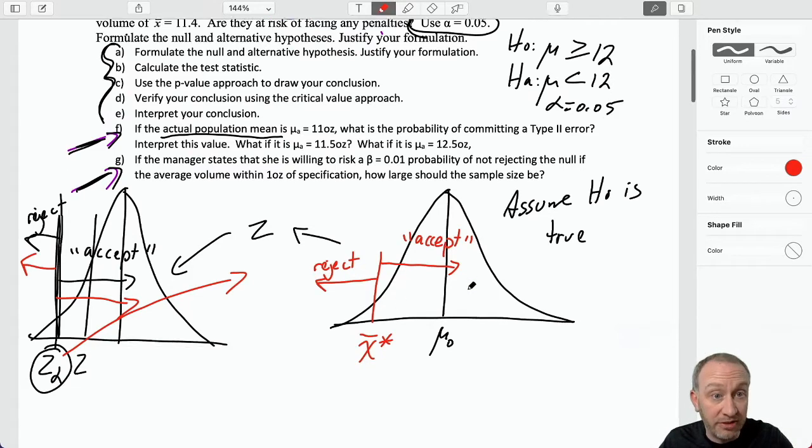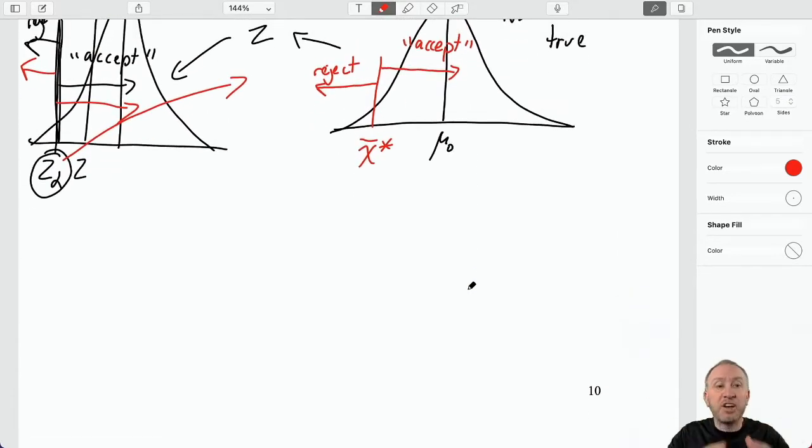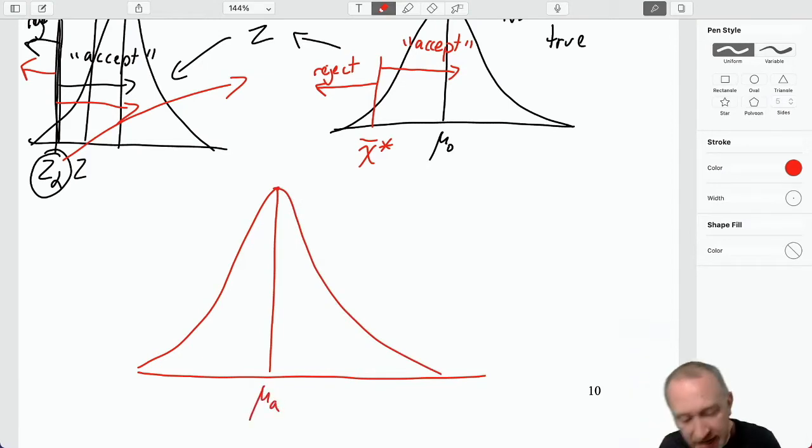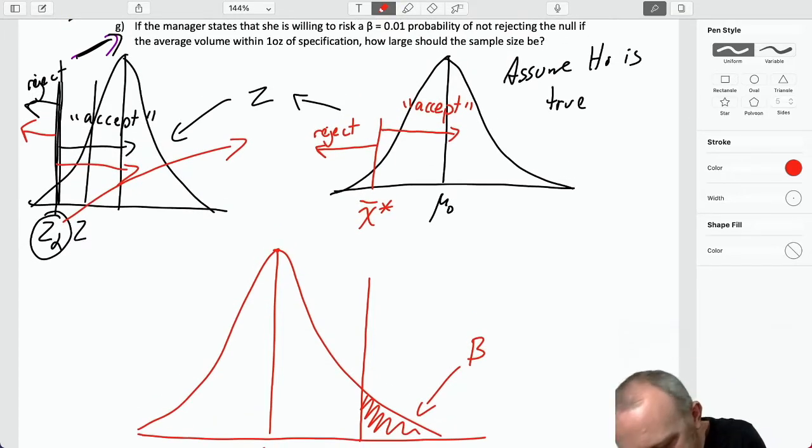Now, in that previous video, of course, then we had these possible realities, where what if the actual population mean, one that does satisfy the alternative, so here's mu a, and I'm drawing it in a way that it does satisfy the alternative, that it's less than that hypothesized value, and then we brought this down here, here's that x-bar star, and then we calculated this area here as beta. And, of course, remember, this all corresponds here, this was that area alpha.